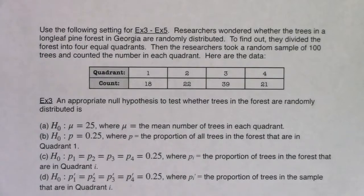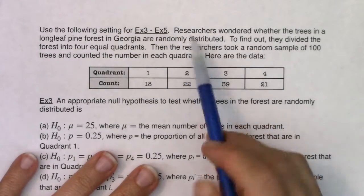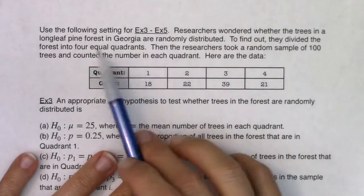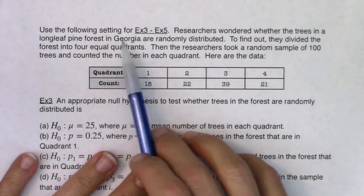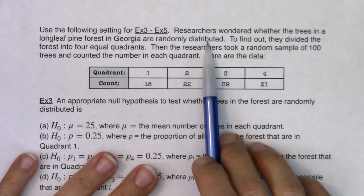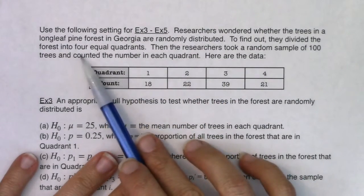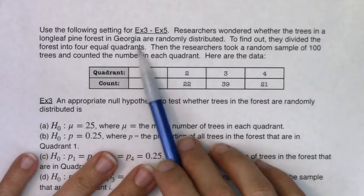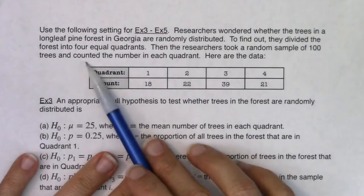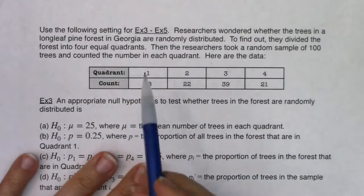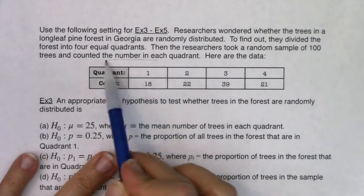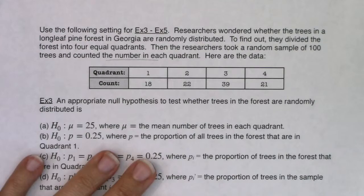So use the following setting for examples three through five. Researchers wondered whether the trees in a longleaf pine forest in Georgia are randomly distributed. To find out, they divided the forest into four equal quadrants. Then researchers took a random sample of 100 trees and counted the number in each quadrant. Here are the data.